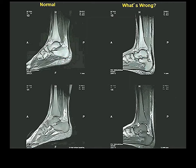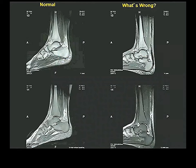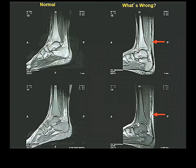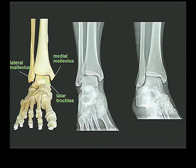On a sagittal MRI of a normal person: tibia, calcaneus, talus visible. Anybody see anything wrong? — Achilles tendon tear. Complete rupture — right there. You see it much better in T2 than in T1. This is a complete tear of the Achilles tendon.